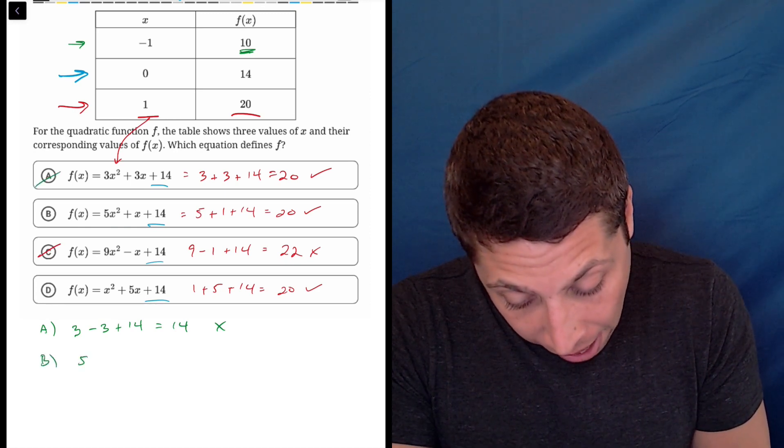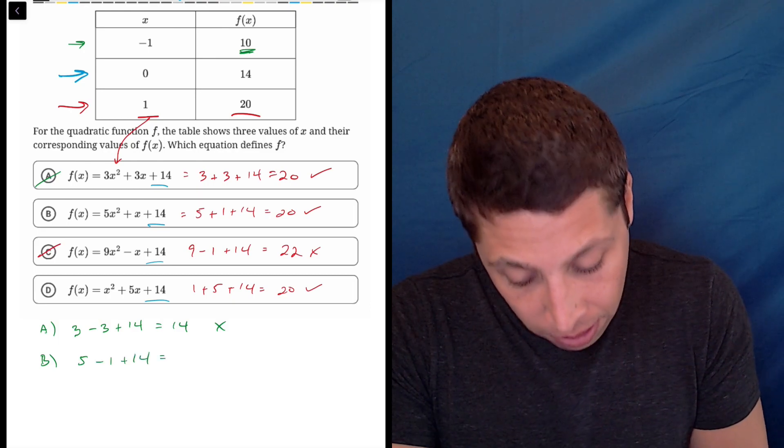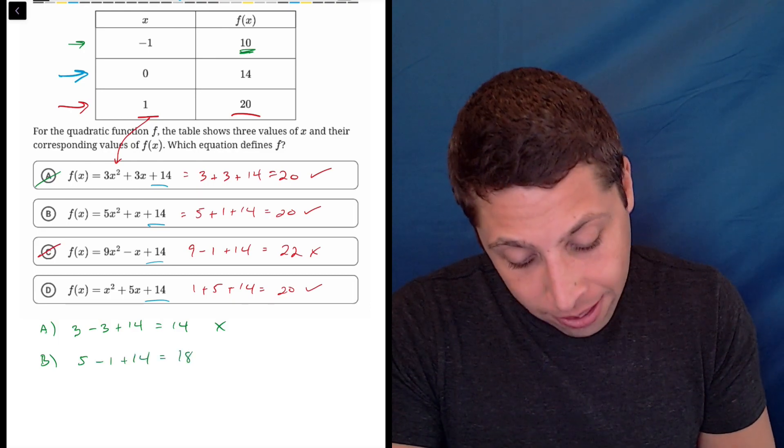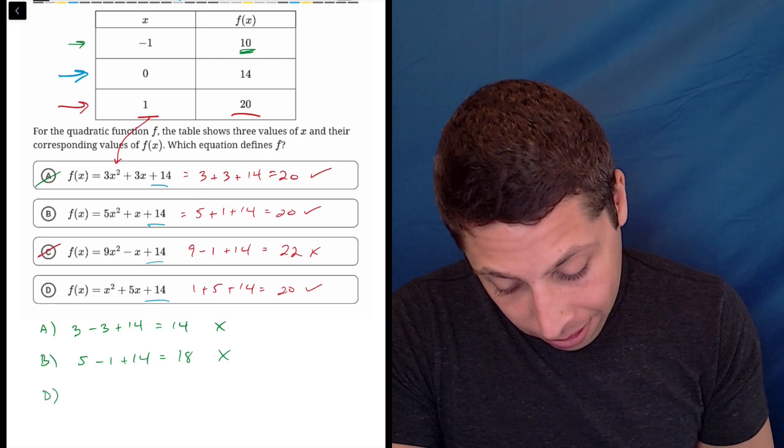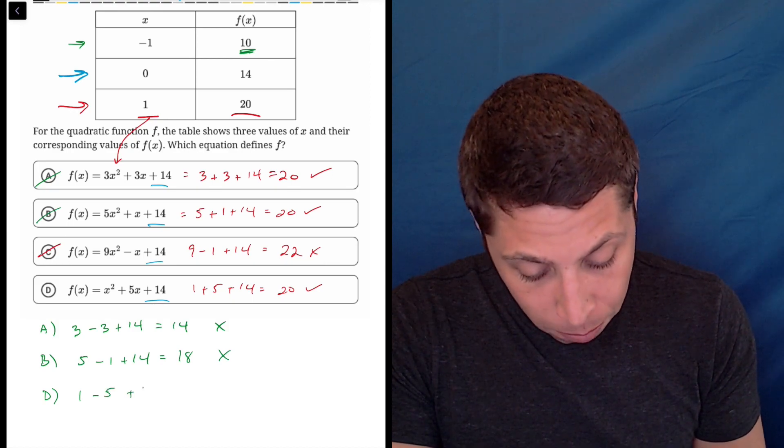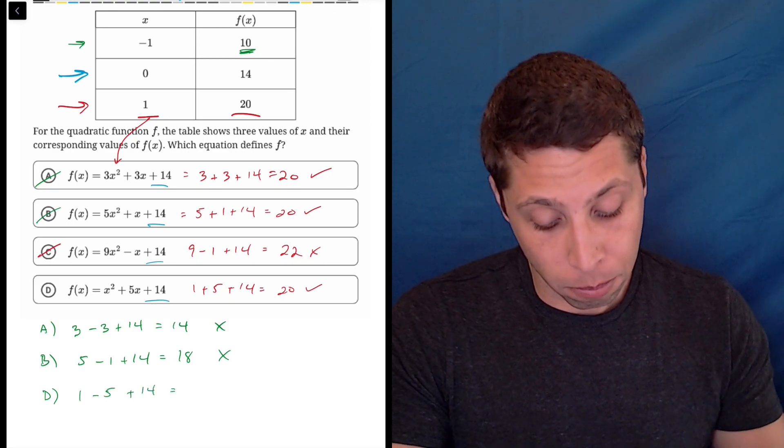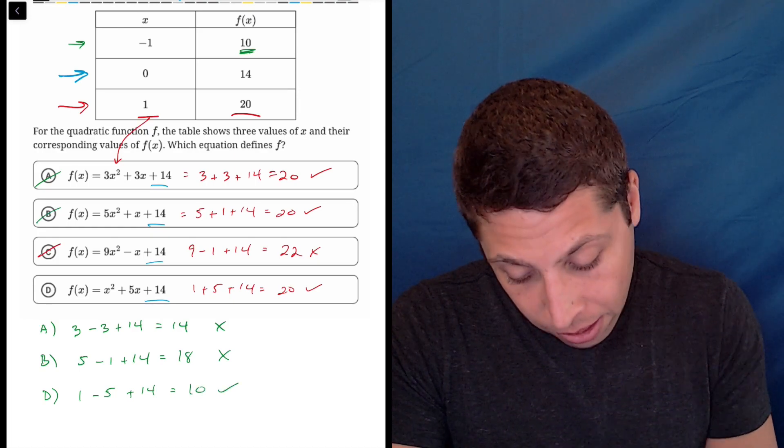B, five is still positive minus one plus 14. That's four plus 14. That's 18. So that doesn't work either. It's supposed to be 10. So hopefully it's D. That's going to be one minus five plus 14. One minus five is negative four. Negative four plus 14 is 10. So there is my proof.